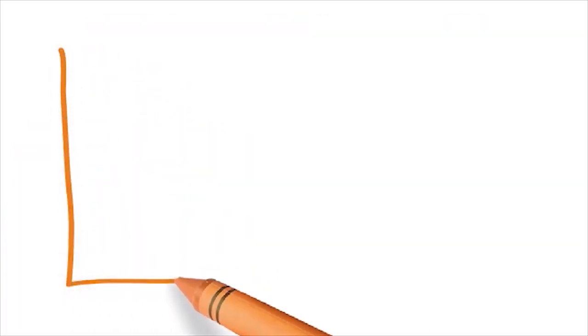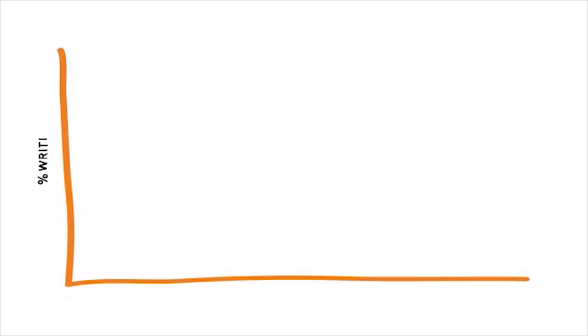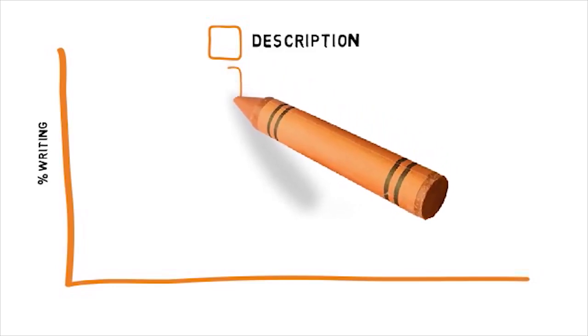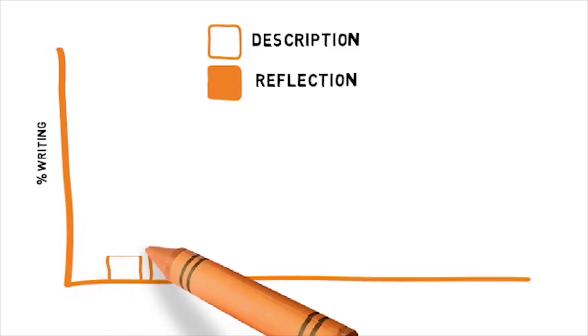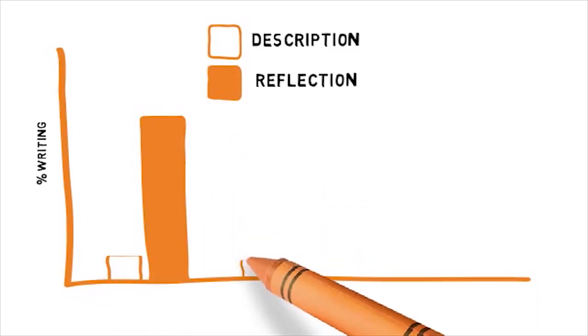So, how much description is needed and how much reflection? Description is important but it should be kept to a minimum. It exists merely in order to put the reflection into context. A typical piece of reflective writing should have short bouts of description followed by a lot of reflection.